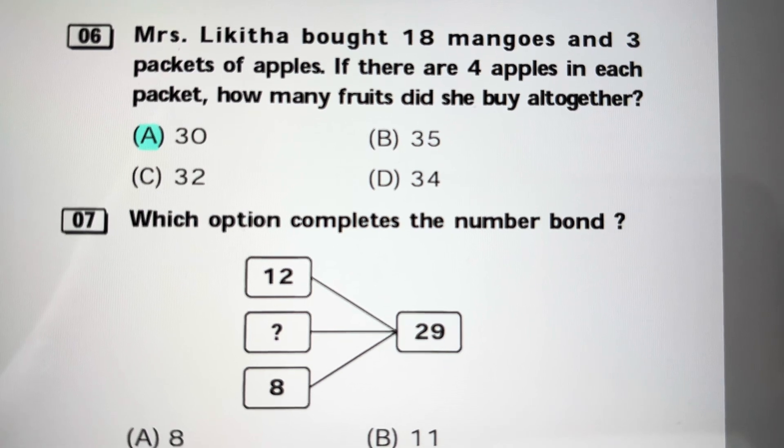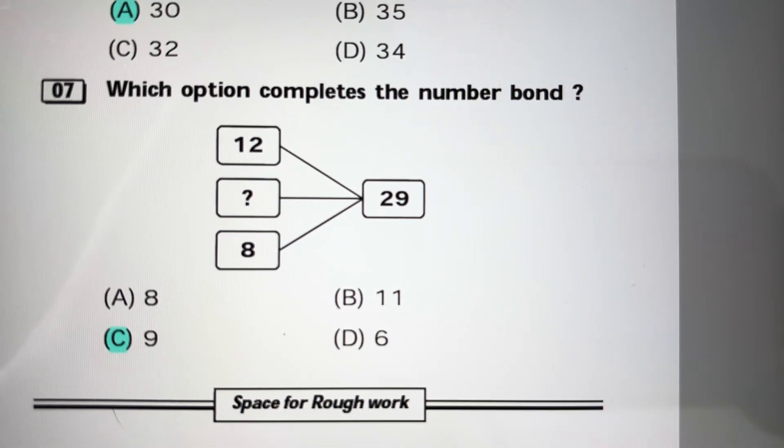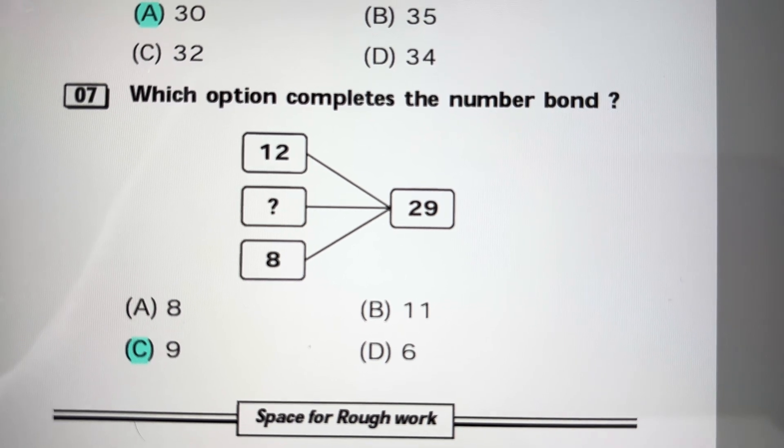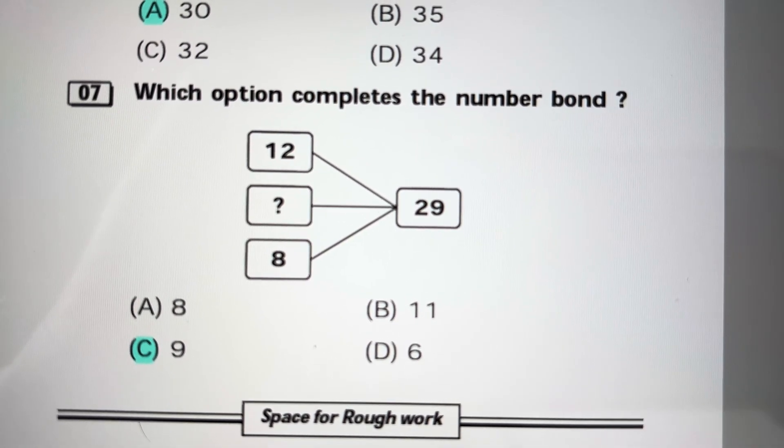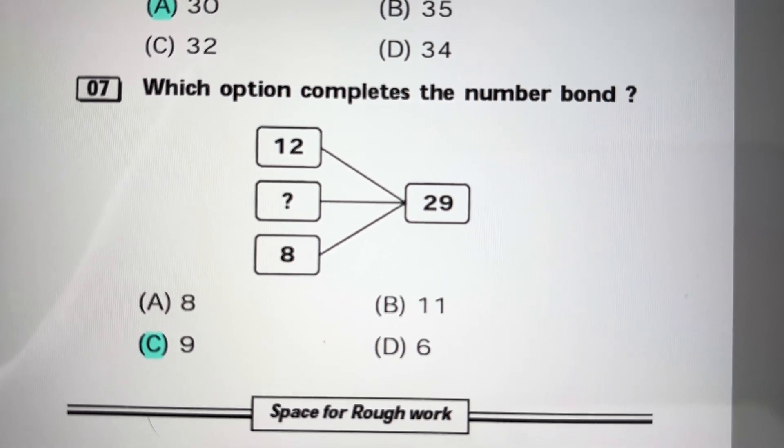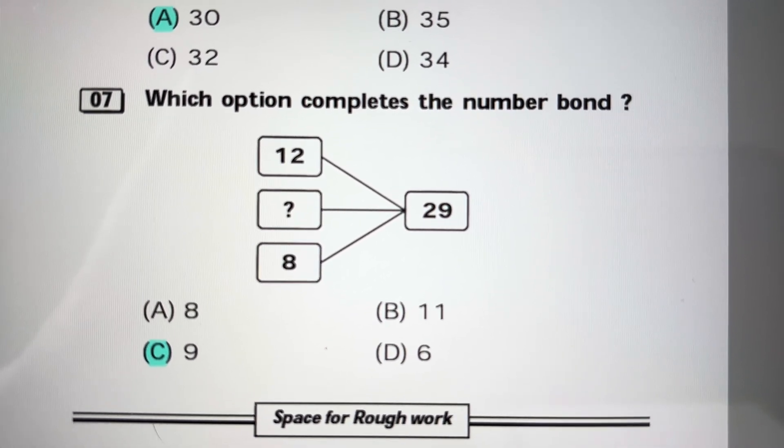Which option completes the number board? 12 plus something plus 8 equals 29. 12 plus 8 equals 20, 20 plus 9 equals 29, so answer is 9. Answer is C.